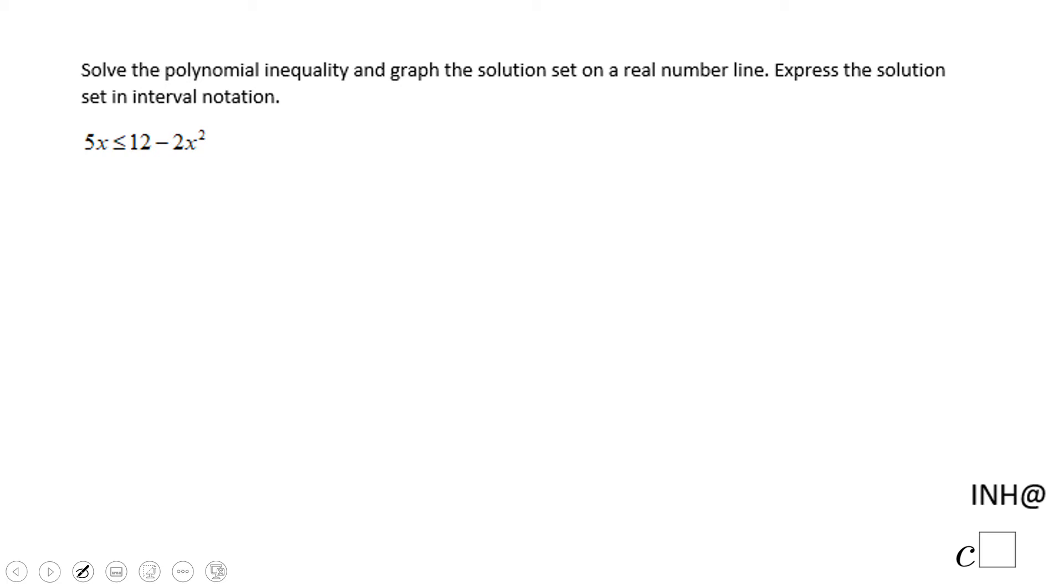Welcome or welcome back at I Need Help at C Squared. In this example we have a polynomial inequality and the first thing you want to do is to have zero on one side. Here I will add 2x squared and I will subtract 12.